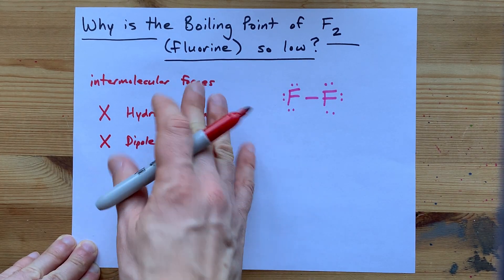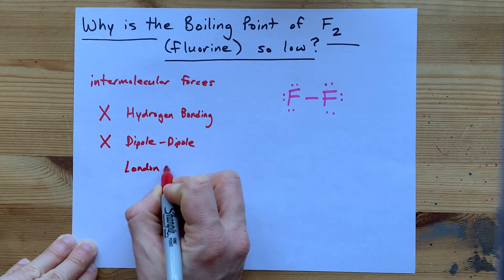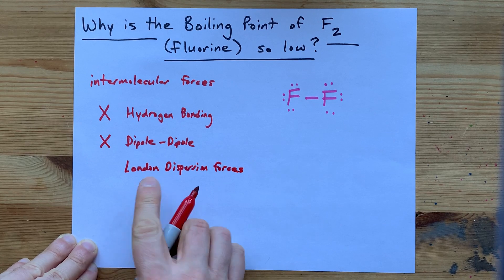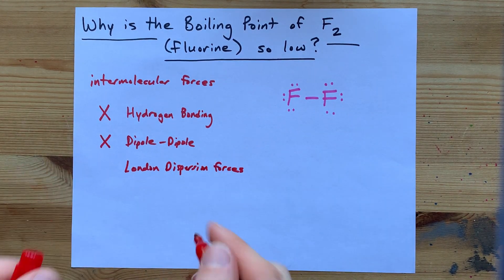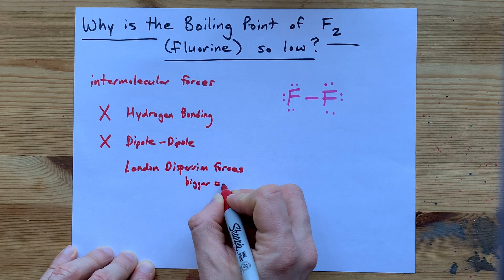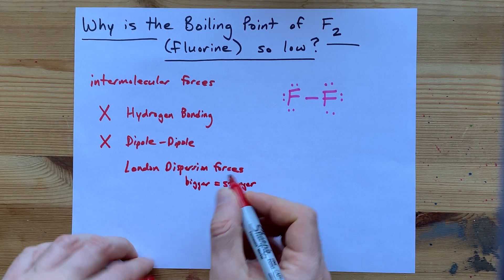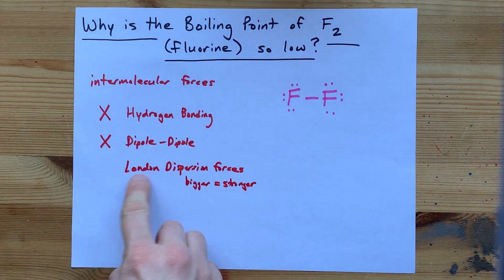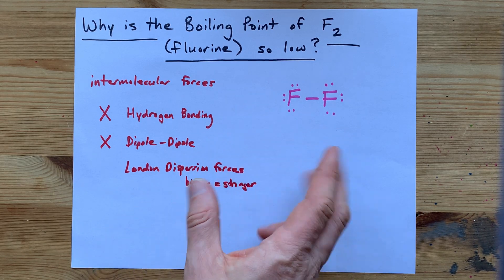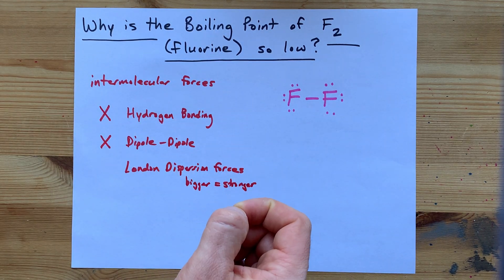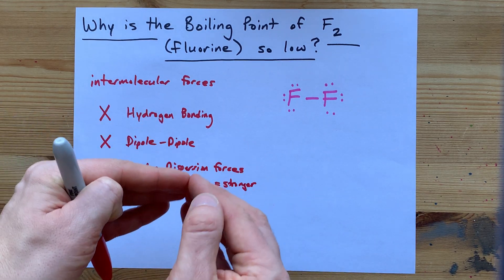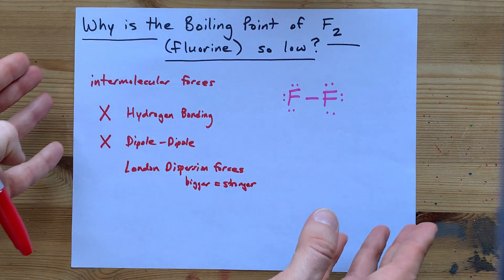The other intermolecular force that you're probably responsible for is called London dispersion forces. All molecules have London dispersion forces, and in general, bigger molecules have stronger London dispersion forces. The stronger the intermolecular forces between molecules, the higher the boiling point because stronger intermolecular forces make the molecules stick together, and then it takes more energy to break them apart.